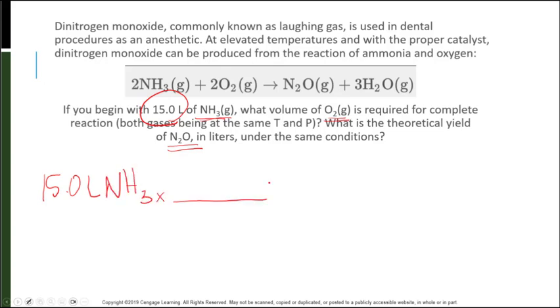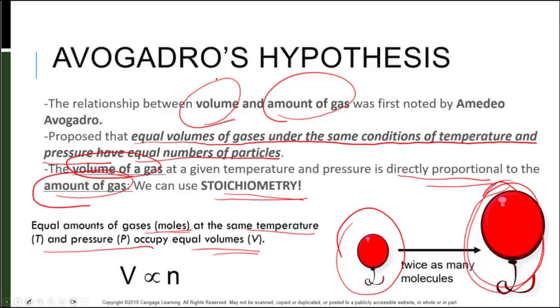So all we're given here is that we have 15.0 liters of NH3. Well, we can use stoichiometry. We said before that if I compared one reactant to another reactant, we used a mole to mole ratio. But now we're saying that equal amounts of gases in moles at the same temperature and pressure occupy equal volumes.